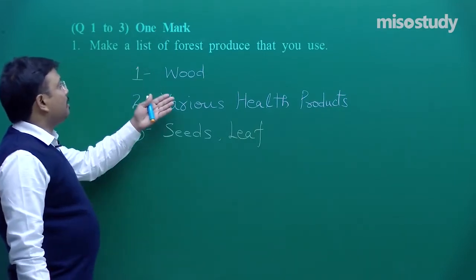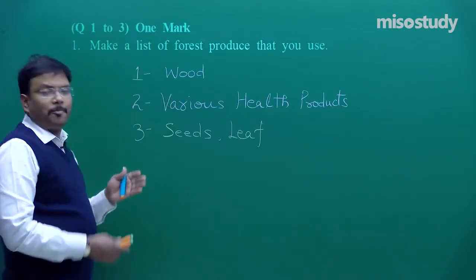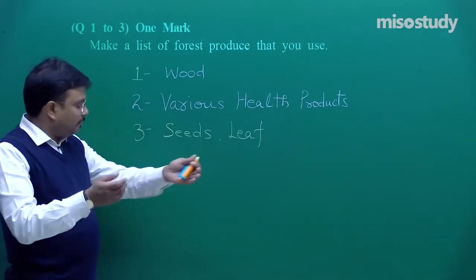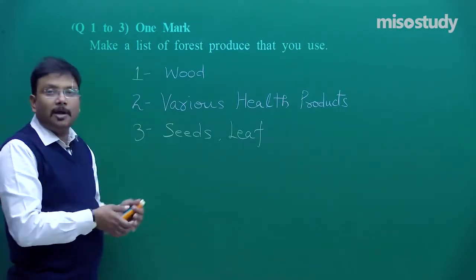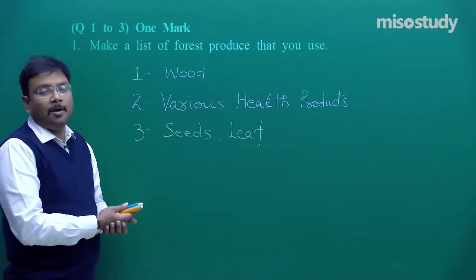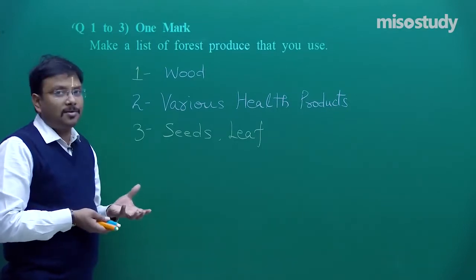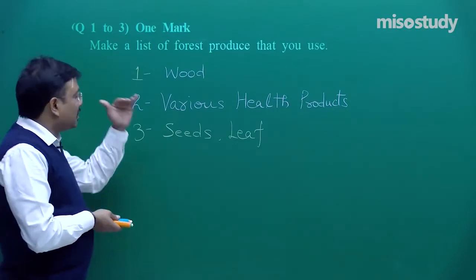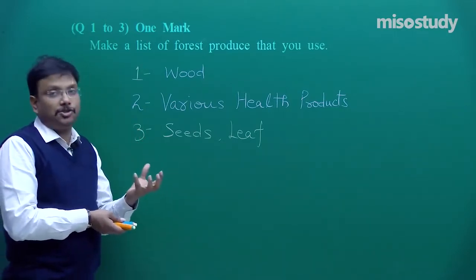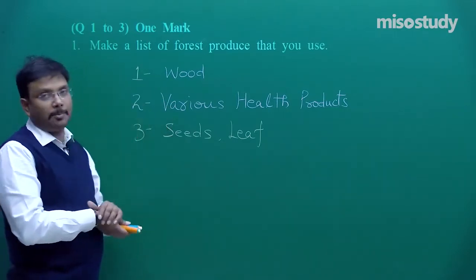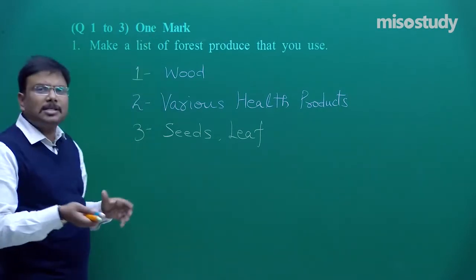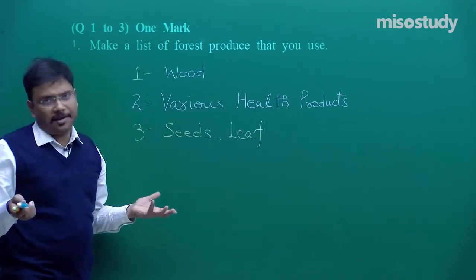This way you can mention any number of products that we are directly getting from the forest. Even the clothes we are wearing are, to some extent, obtained from forest plants. Without any preparation, on the basis of your knowledge, you can produce the answer to these types of questions. Importantly, this question is for one mark, so you just have to mention one or two words — that is it.